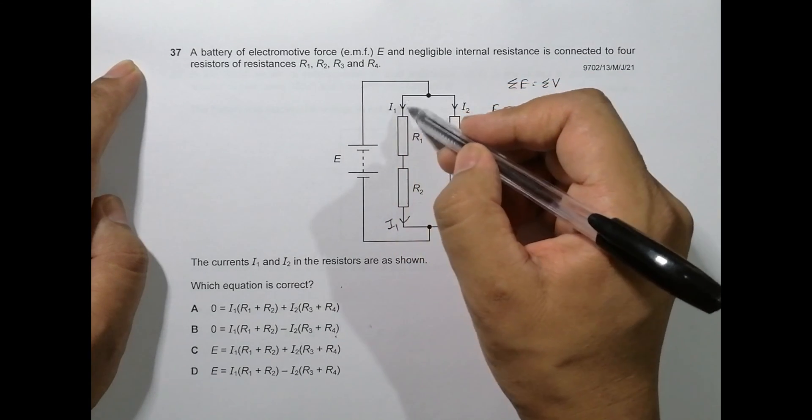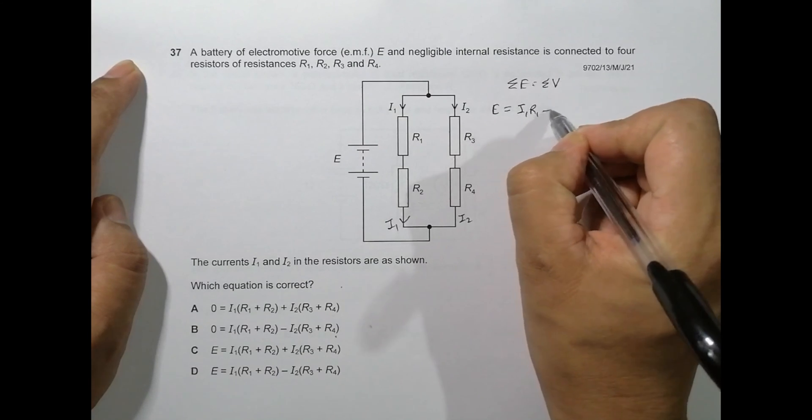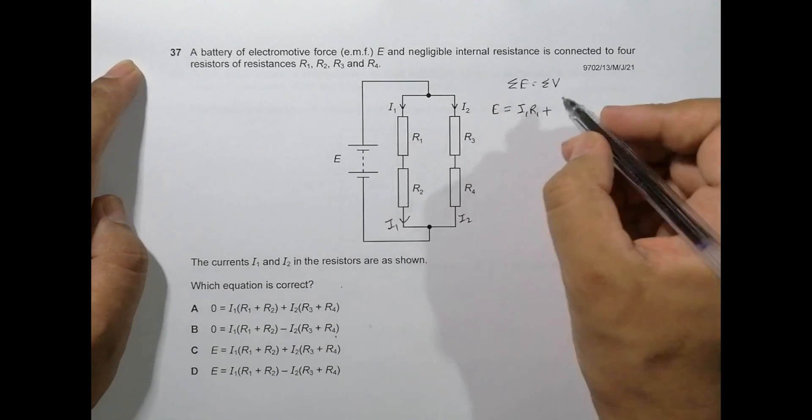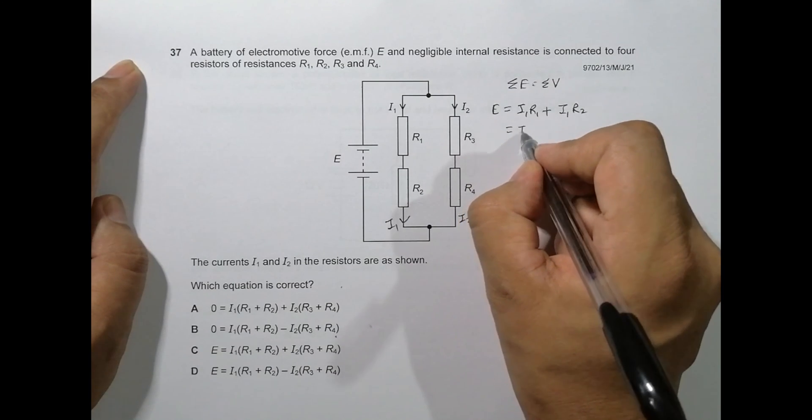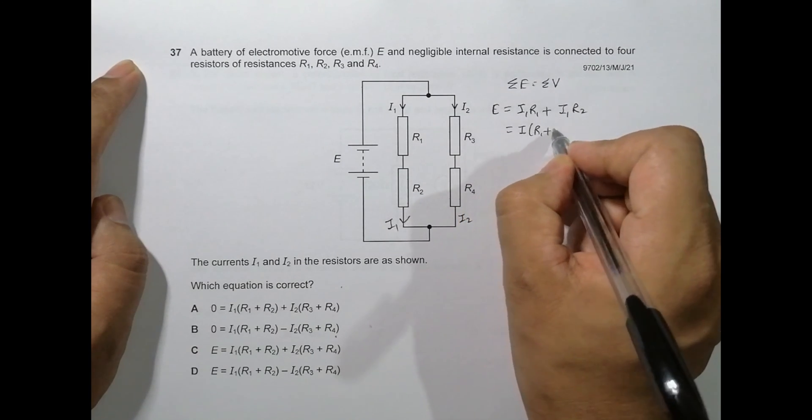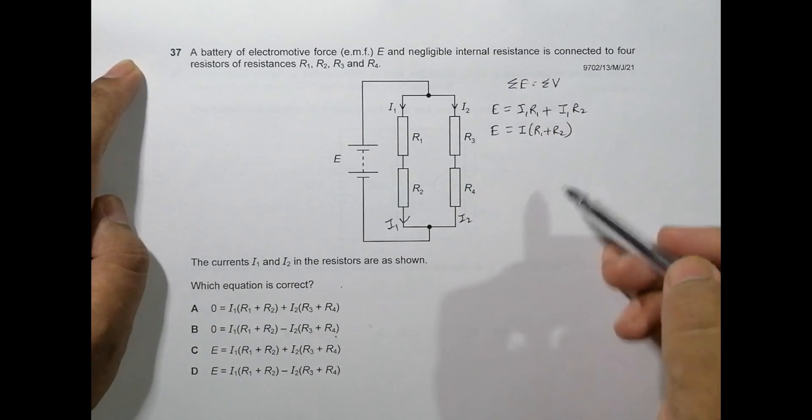It will be I1·R1 plus - here also the current is I1 - so it is equal to I1·R2. Altogether it becomes E = I1(R1 + R2). So one of the equations is this, and this is not available anywhere in the options. Here it is something plus and something minus.